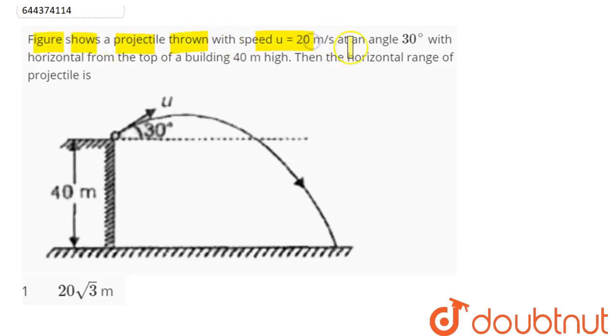thrown with speed 20 meter per second at an angle 30 degree with horizontal from top of a building 40 meter high. The horizontal range of the projectile is? We can say displacement along y direction is